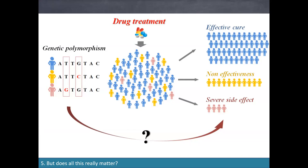This understanding matters for our health. In drug treatment, if you treat patients with the same drug at the same dosage, a large part will improve, some will show no effect, and a few may have severe side effects. We know this depends on genetic variation — polymorphisms in the DNA. People who don't benefit from treatment may have a C where others have a G, and those with severe side effects may have a G instead of a T at another position.